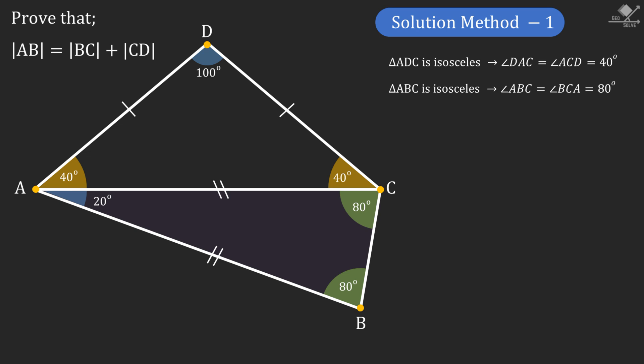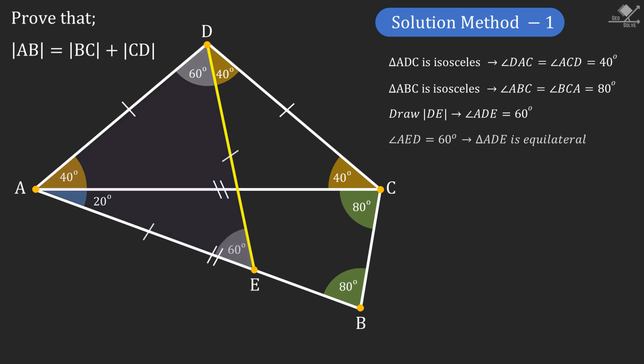Now let's create a point E and connect it to point D such that angle ADE is 60 degrees. From here it can be seen that angle AED will also be 60 degrees, and triangle AED will be an equilateral triangle.